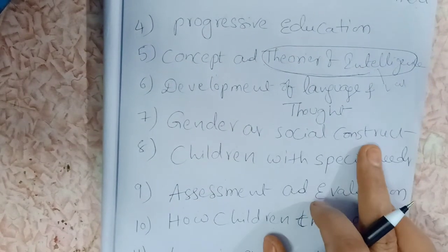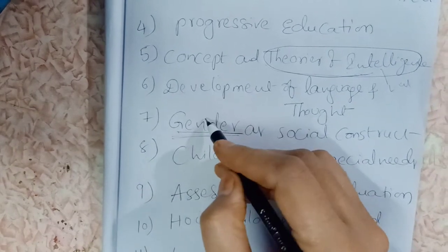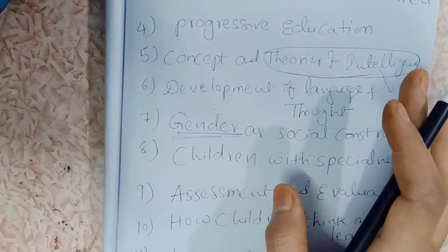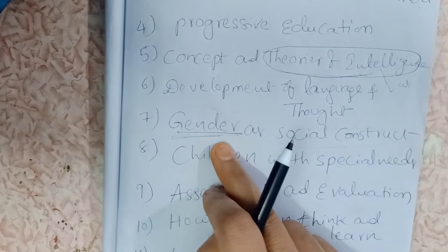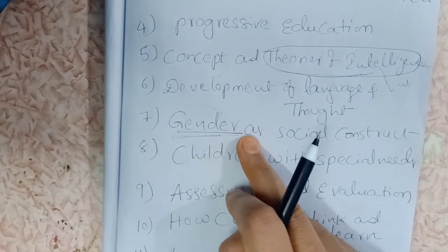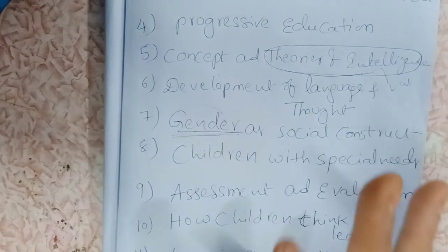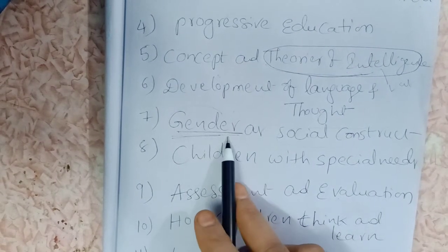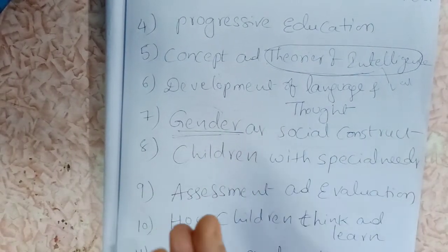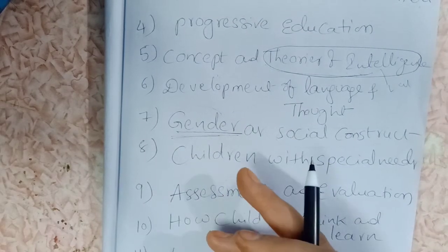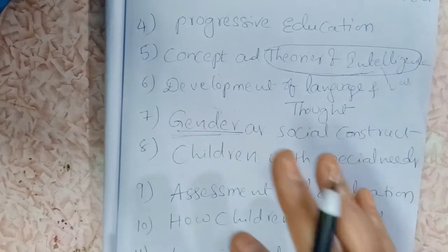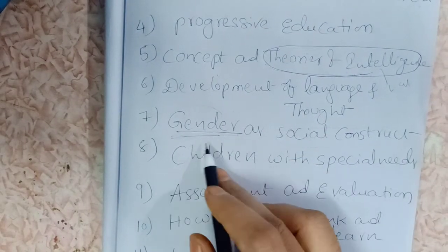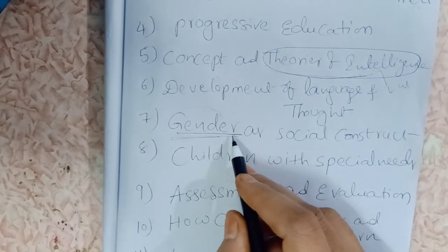Gender as a social construct is the seventh topic. It deals with whether gender is about being male or female as defined by society. Key subtopics include family, marriage, gender stereotypes — which is a very important topic — gender stereotypes and media, and gender in education.